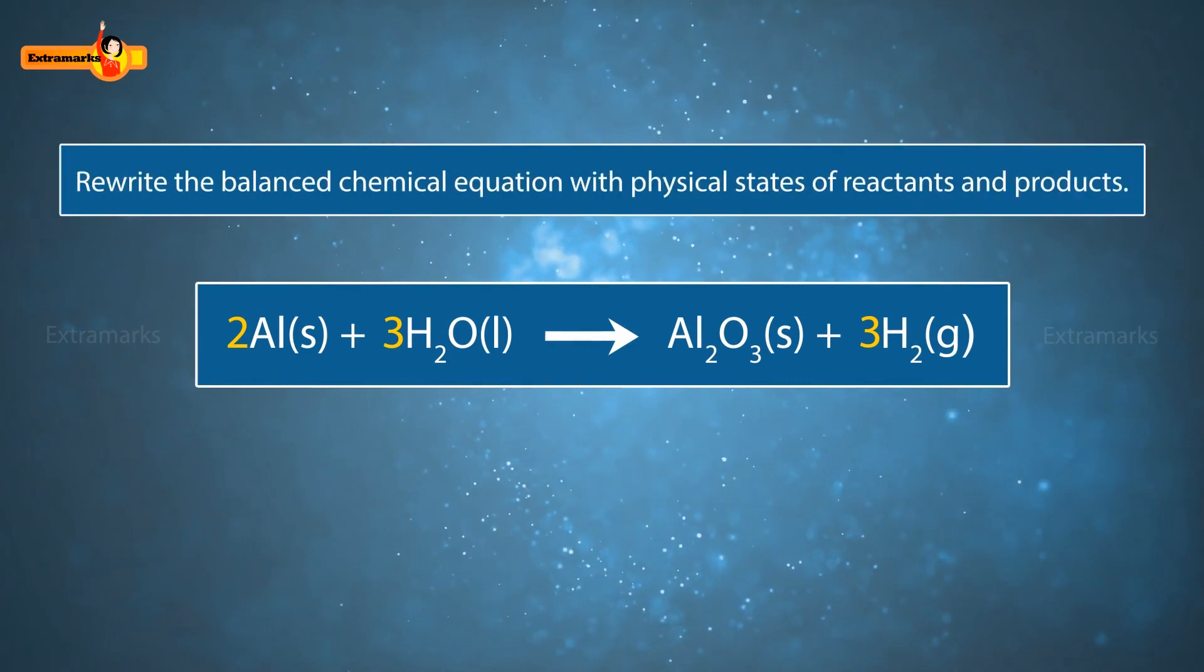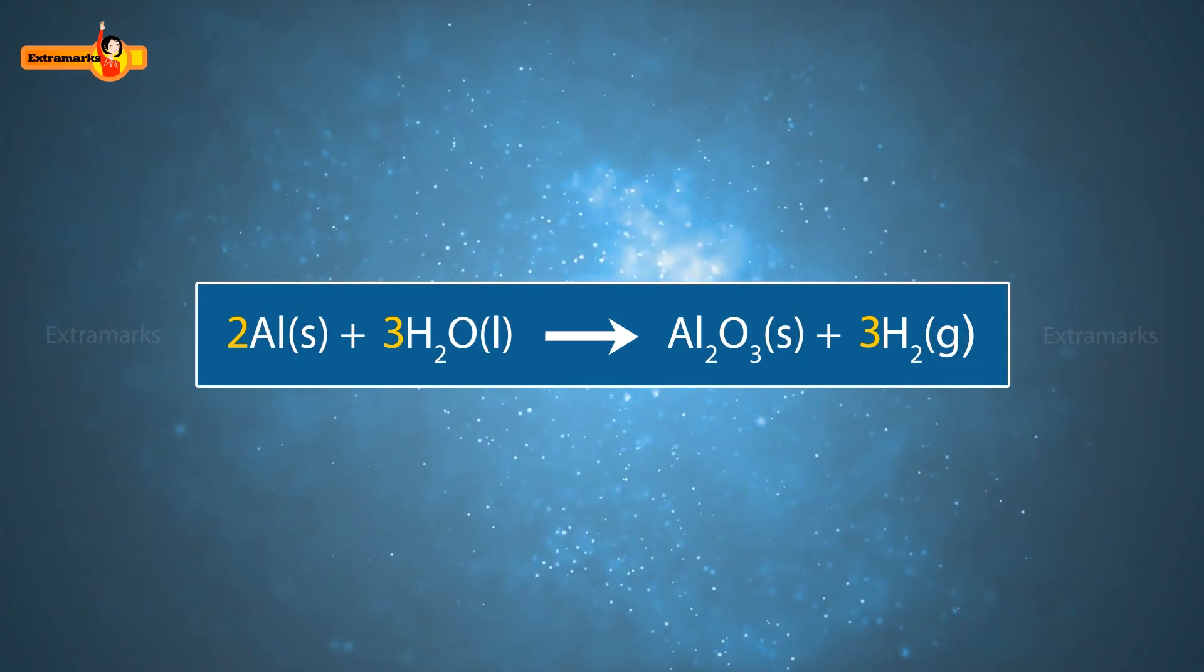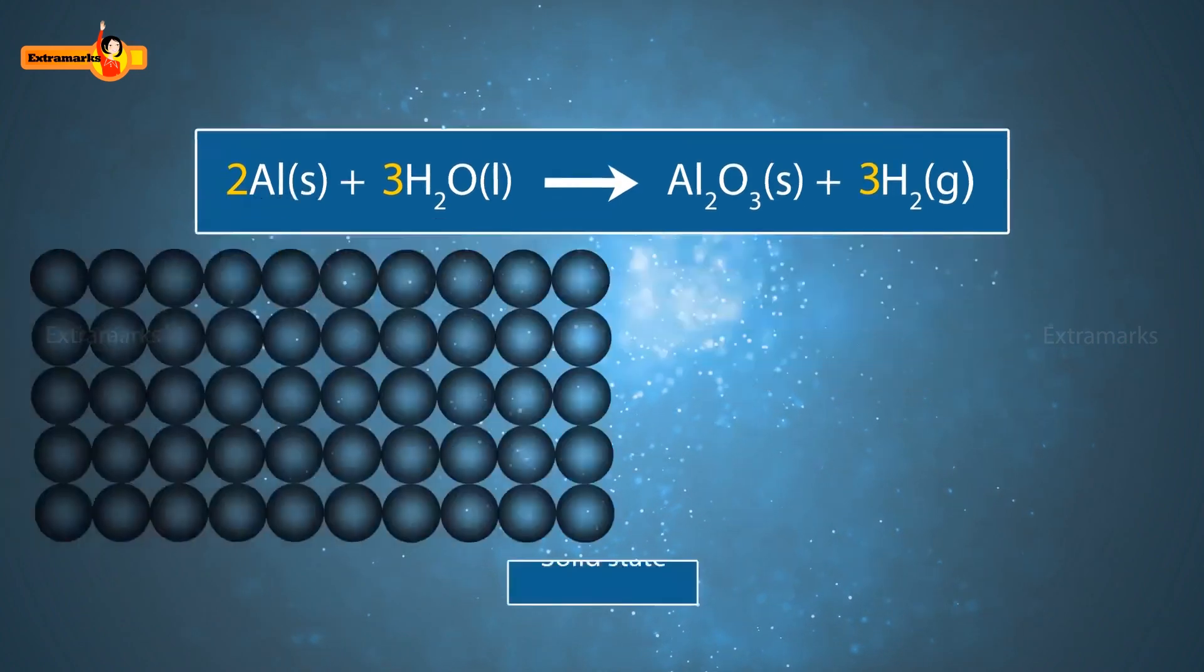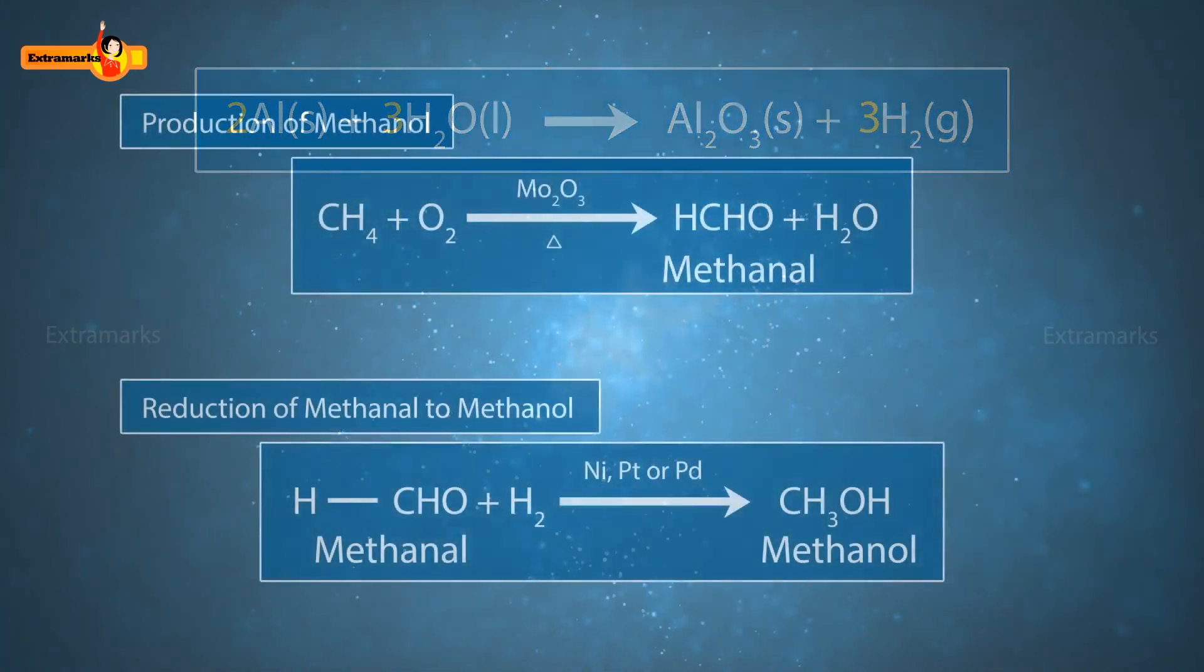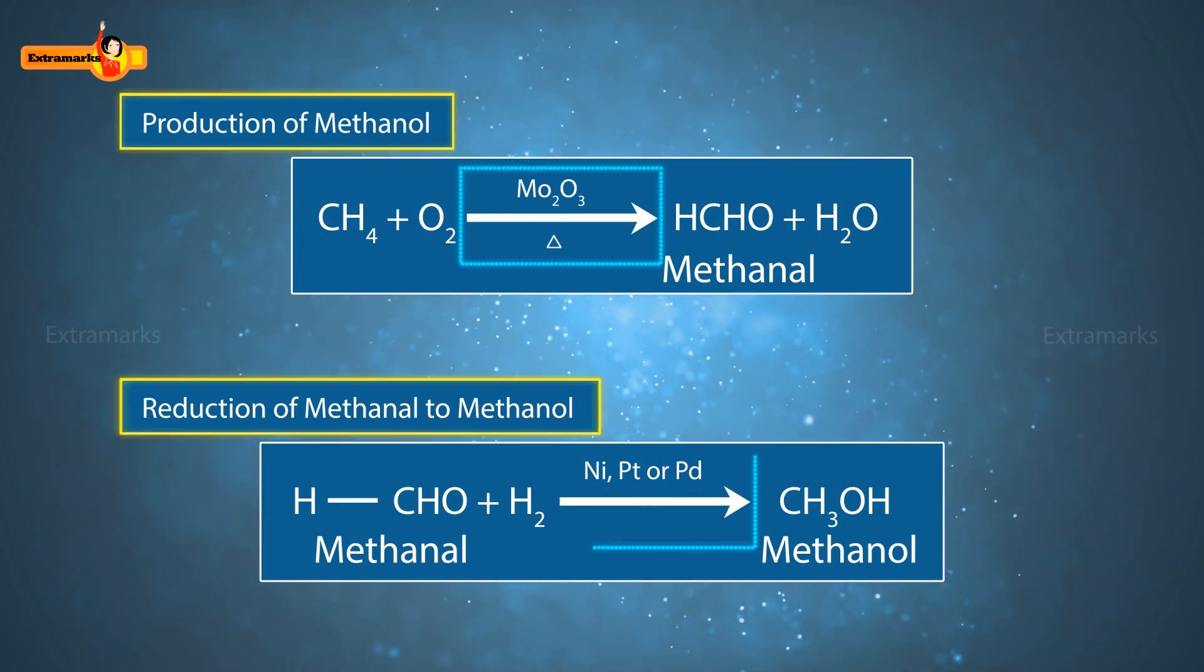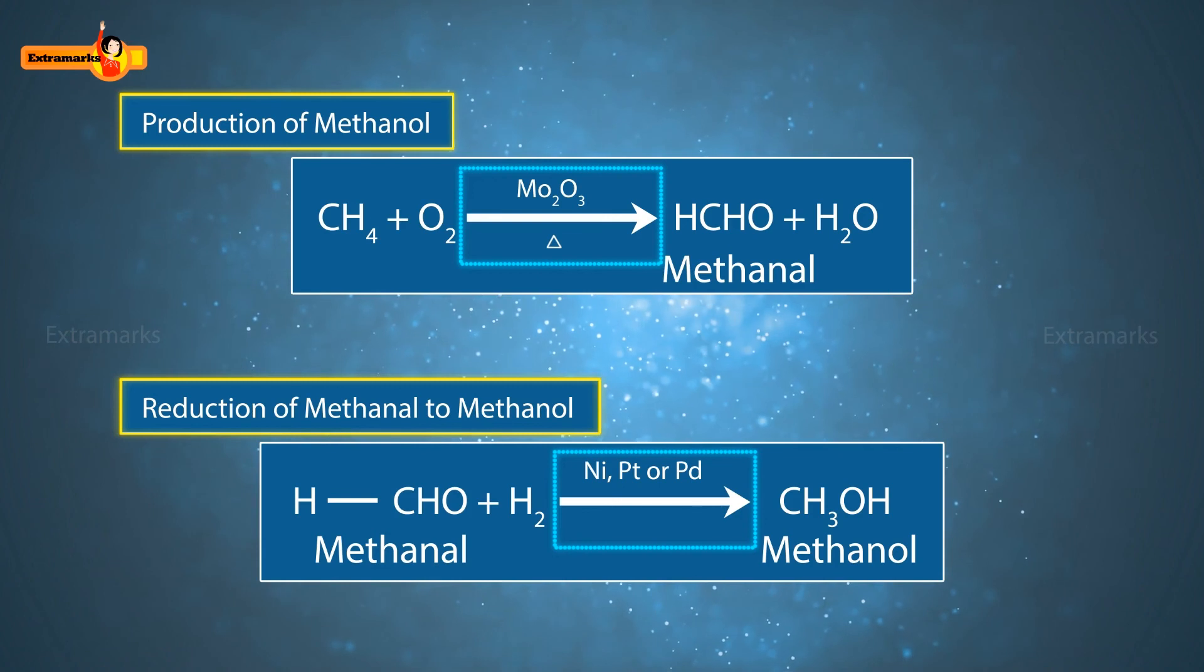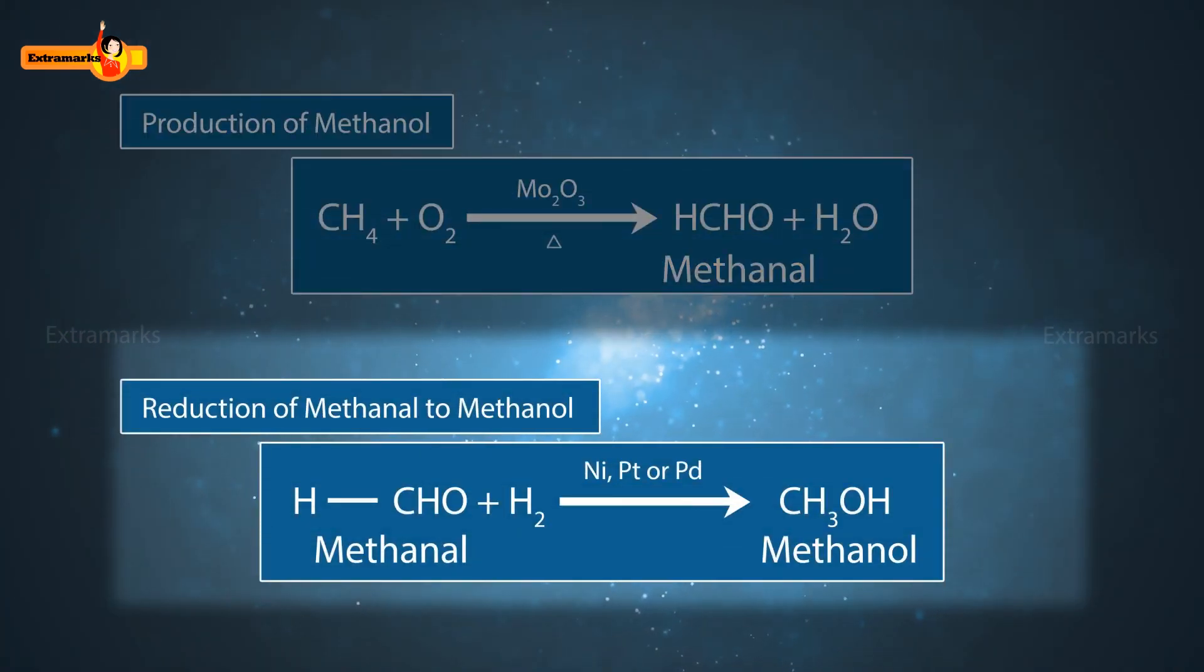Now, we will rewrite the balanced chemical equation with physical states of reactants and products. Here, S, L and G written in the brackets in the reactants and products represent the solid, liquid and gaseous state. In some reactions, conditions such as temperature, pressure, catalyst, etc. are also mentioned. They are indicated above and below the arrow in the equation. For example, production of methanol and reduction of methanol to methanol.